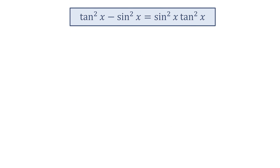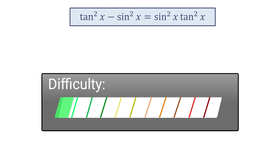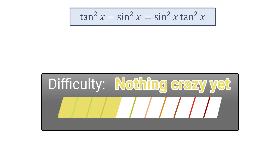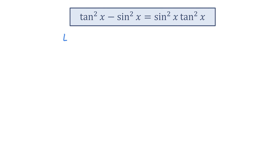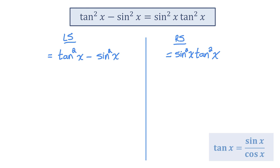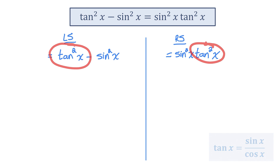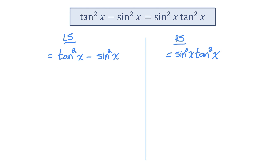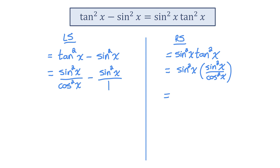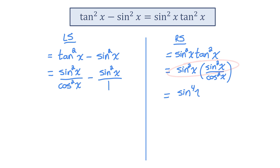Identity number four. I'll separate into left and right side. I'll start by using my quotient identity, which tells me tan is equal to sine over cos. So I can replace those tan squareds with sine squared over cos squared. And on the right side, I have sine squared times sine squared, which is sine to the power of 4x — when multiplying powers of the same base, we add the exponents — and that's over cos squared x.